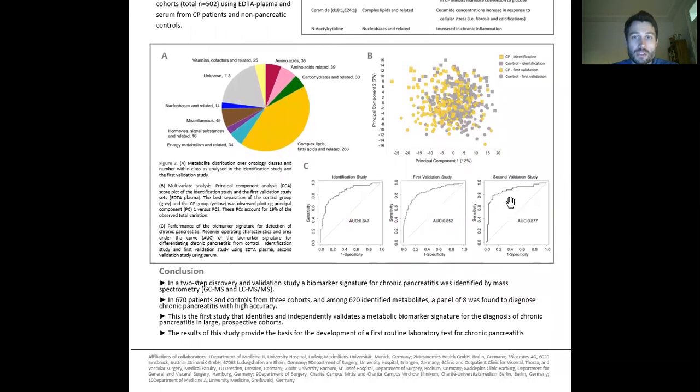And in the interest of time, I'm only going to discuss panel C of Figure 2, which shows you the diagnostic characteristics of our biomarker signature. As per definition, the identification study had an AUC of 85% with sensitivity and specificity acceptable for a diagnostic biomarker. This performance could be validated in the first validation study with a very similar accuracy of about 85%.